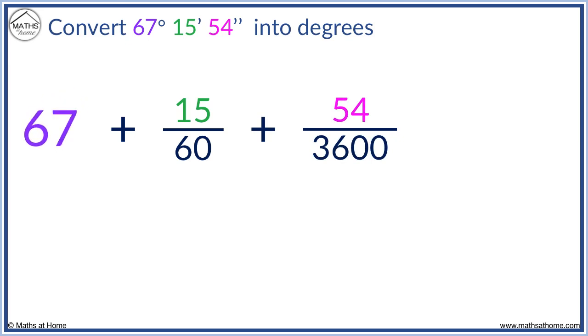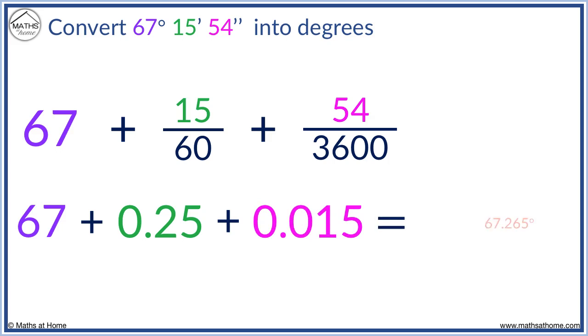We have 67. 15 divided by 60 equals 0.25. 54 divided by 3,600 equals 0.015. Adding these results, we obtain 67.265 degrees.